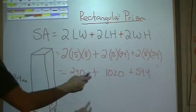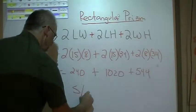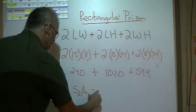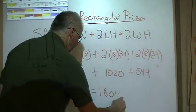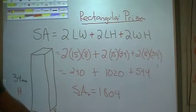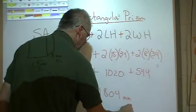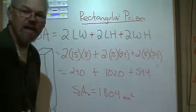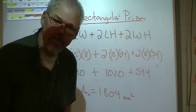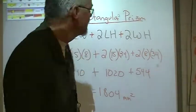All right, add them all up. See what we get here. Surface area of this rectangular prism comes out to 1804. What do we have? Millimeters squared. Remember, area is always squared, always squared.